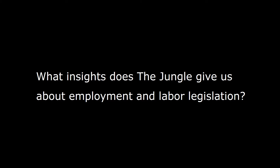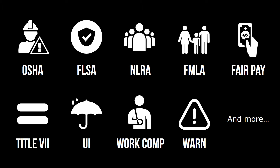Second, what insights does The Jungle give us about employment and labor legislation? There are nine primary employment or labor legislation issues to consider. Those that come to mind are OSHA (the Occupational Safety and Health Act), the FLSA (Fair Labor Standards Act), the NLRA (National Labor Relations Act), the FMLA (Family Medical Leave Act), the Lilly Ledbetter Fair Pay Act, Title VII of the Civil Rights Act, unemployment insurance and related regulation, workers' compensation insurance and related legislation, and the WARN Act (Worker Adjustment and Retraining Notification Act). There are many more as you consider the history of both the letter and spirit of the law, compliance today, and the ethical treatment of employees.